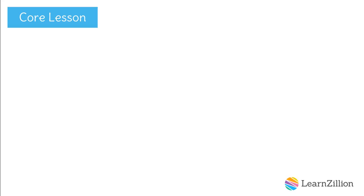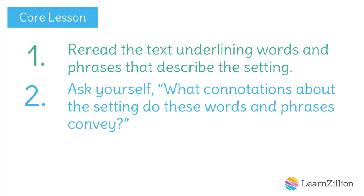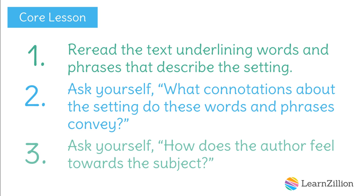So when we are trying to identify the tone, we should follow these three steps. First, reread the text underlining words and phrases that describe the setting. Then, ask yourself what connotations about the setting do these words and phrases convey. And third, ask yourself how does the author feel towards the subject.